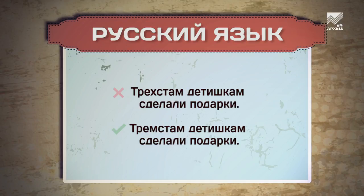300 детишкам сделали подарки. Часто ошибаются на хитрой букве Х, которая то появляется в сложных количественных числительных: 300 (родительный падеж), 300 (предложный падеж) — то исчезает: 300 (дательный падеж), 300 (творительный падеж). Запоминаем и больше не сомневаемся.